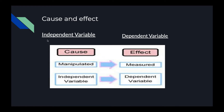The independent variable is the factor under investigation in an experiment — whether it's a laboratory experiment or a field experiment. This variable is the one we are testing, and we look at the effects of it on our dependent variable. The independent variable is manipulated to create two or more experimental conditions and is expected to be responsible for changes in the dependent variable.